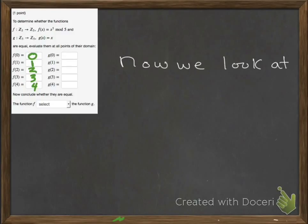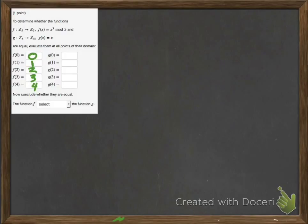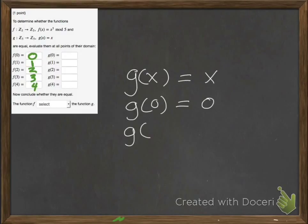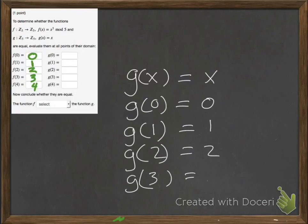Now we evaluate the function g, which is a lot simpler. g of x equals x. So g of 0 equals 0, g of 1 equals 1, g of 2 equals 2, g of 3 equals 3, and g of 4 equals 4. We write those in.